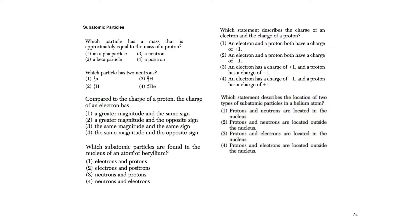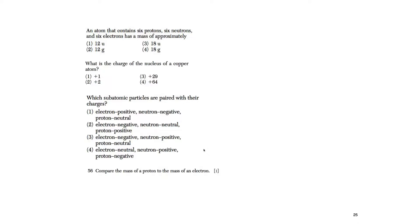Which subatomic particles are found in the nucleus? Protons and neutrons — always. Which statement describes the charge of an electron and a proton? Plus one and minus one. Which statement describes the location of two types of subatomic particles? Protons and neutrons are in the nucleus. An atom with six protons, six neutrons, and six electrons has a mass of 12 u — only protons and neutrons count. The charge of a copper nucleus equals the number of protons — check the periodic table.